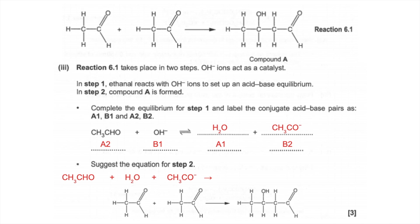Moving on to the products of step 2: the OH⁻ ion is a reactant of step 1 but not in the overall equation, so we need to cancel it by making it a product of step 2. Finally, we haven't made compound A yet, so we need that as a product as well.